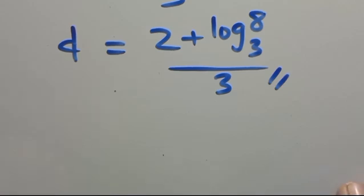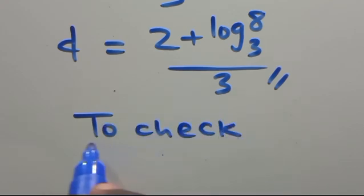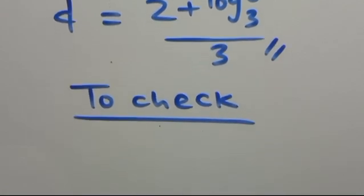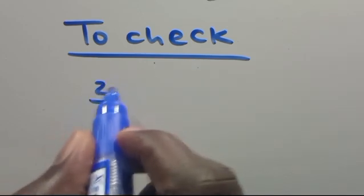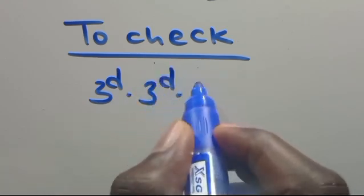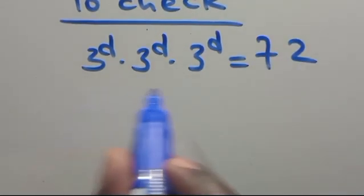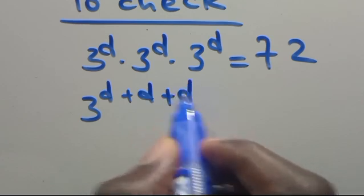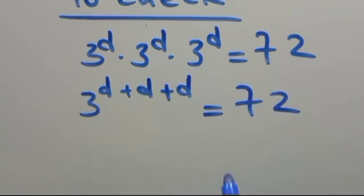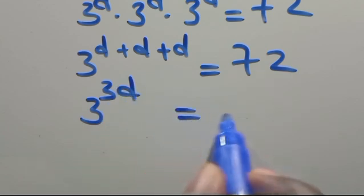Now let us verify the answer we got. To check, we recall that we have 3 to the power of D times 3 to the power of D times 3 to the power of D equals 72. We simplify this to 3 to the power of D plus D plus D equals 72, which gives us 3 to the power of 3D equals 72.